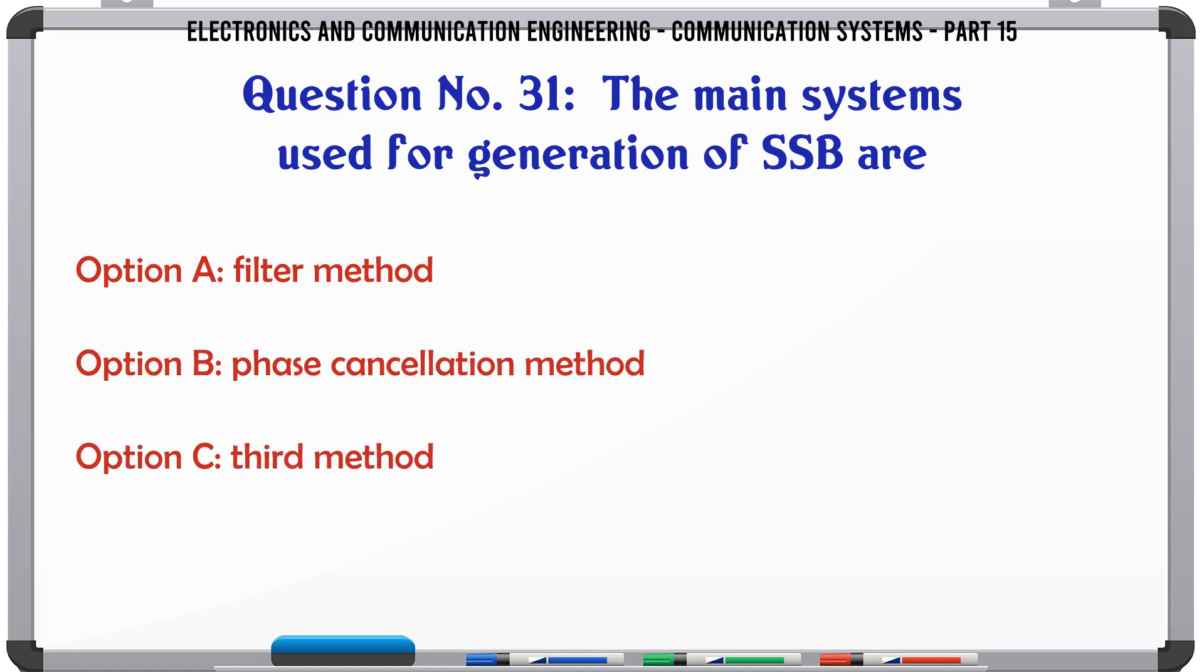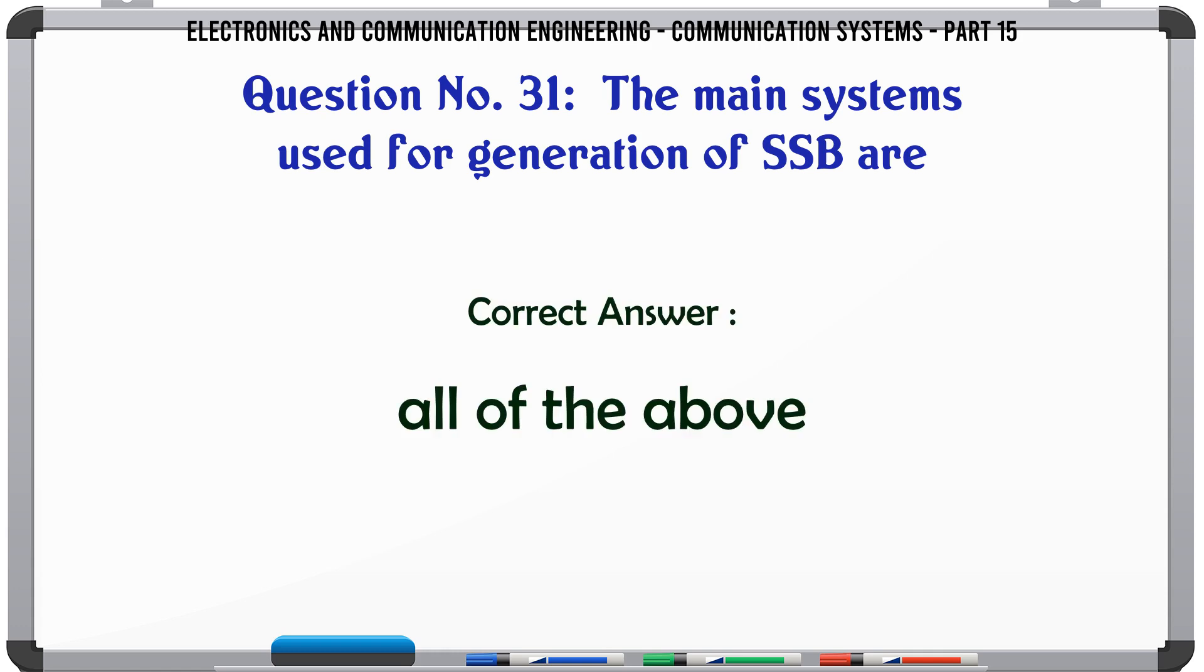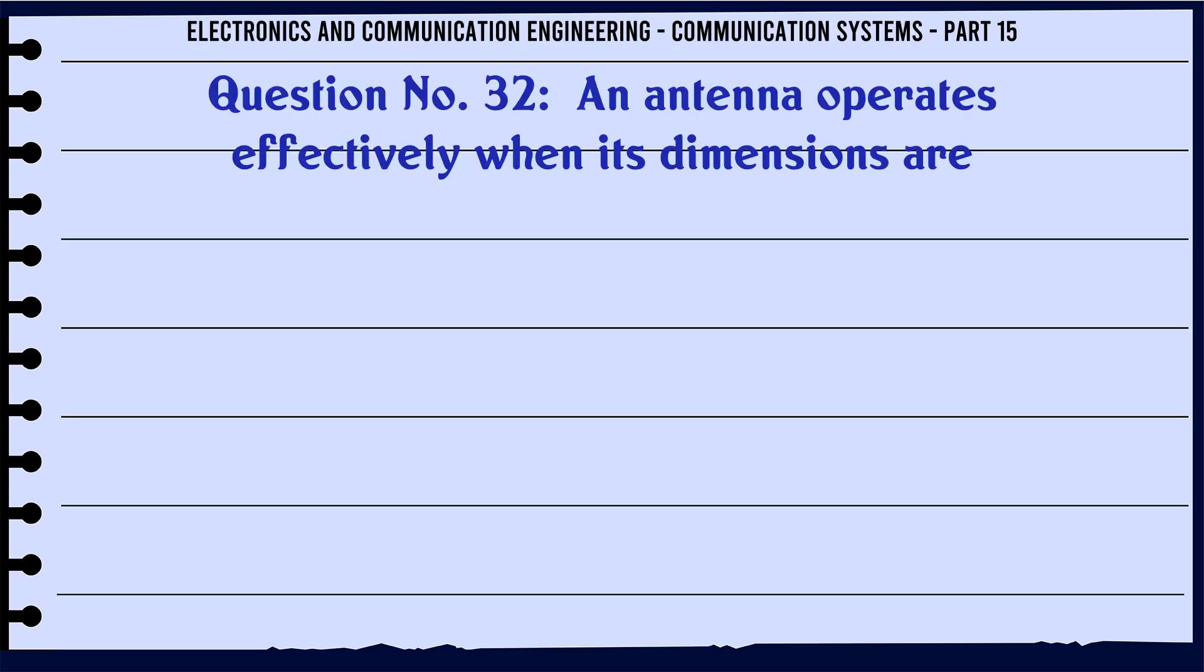The main systems used for generation of SSB are: A filter method, B phase cancellation method, C third method, D all of the above. The correct answer is all of the above.